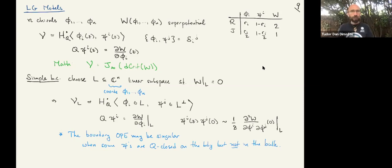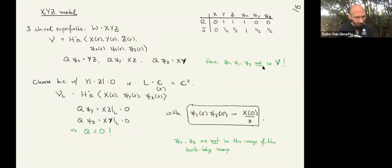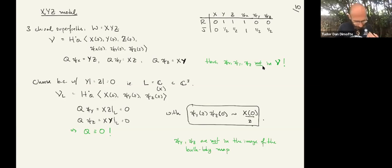The boundary OPE will make more sense in examples. In computations, this is a standard one-loop Feynman diagram that gives rise to this. The OPE of two boundary fermions is 1/z times the second derivative of the superpotential. Let me do the canonical example: if we consider the XYZ model — three chiral superfields X, Y, Z in the bulk — the bulk algebra has three bosons and their fermionic superpartners, and Q of fermion-X is boson YZ, and so on.